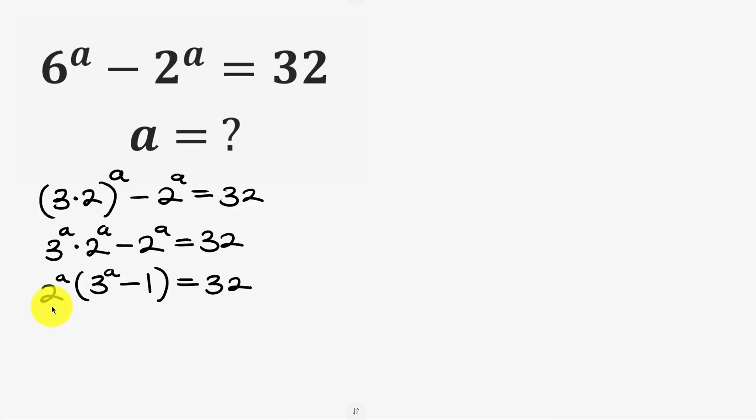Now notice that we have two factors on the left which are 2 to power a and 3 to power a minus 1 which multiply to give 32. That means we're going to be writing out the factors of 32. Factors of 32 are 1 times 32, we have 2 times 16, and we also have 4 times 8.